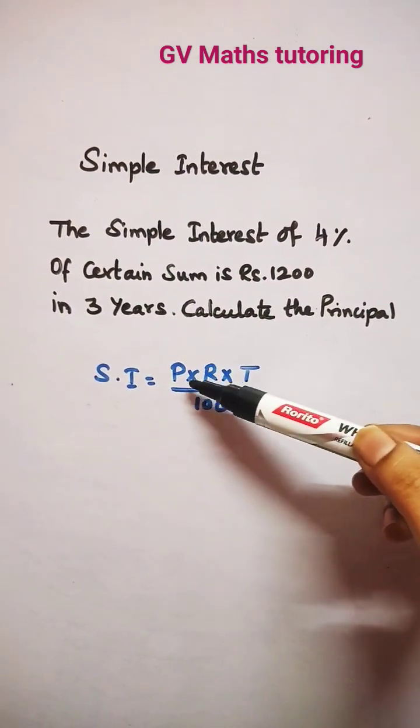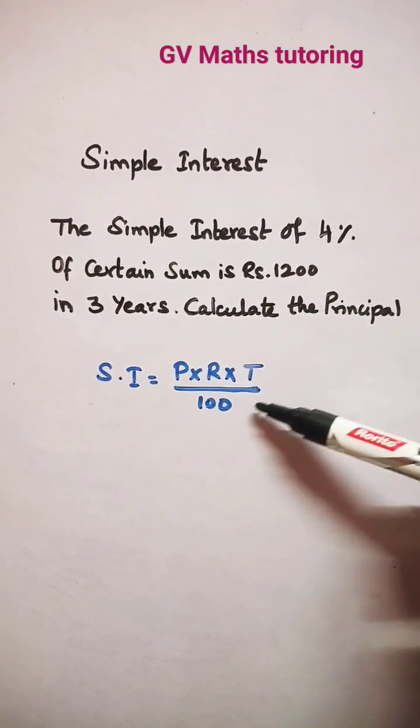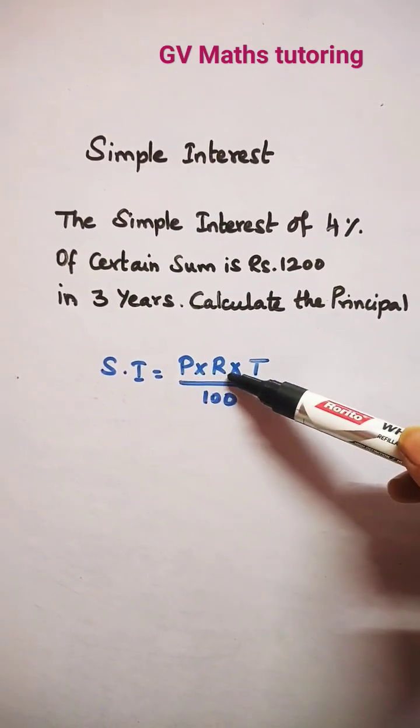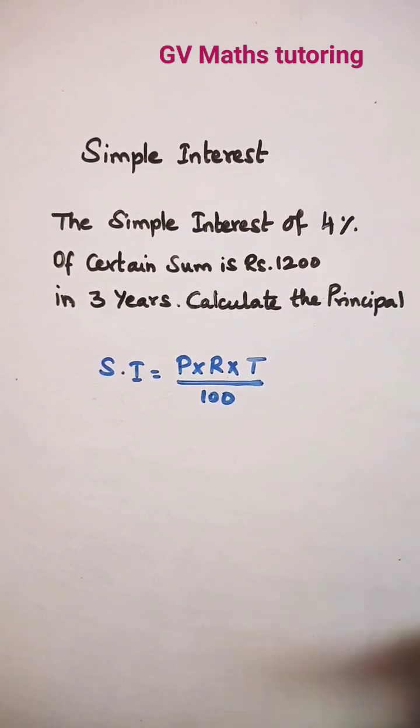So, formula for simple interest is P into R into T divided by 100. That is principal amount into rate of interest into time period divided by 100.